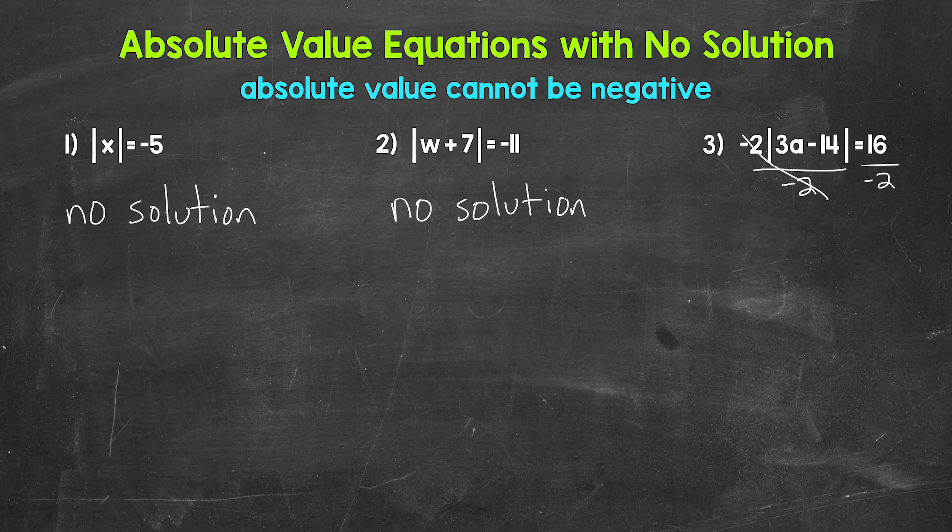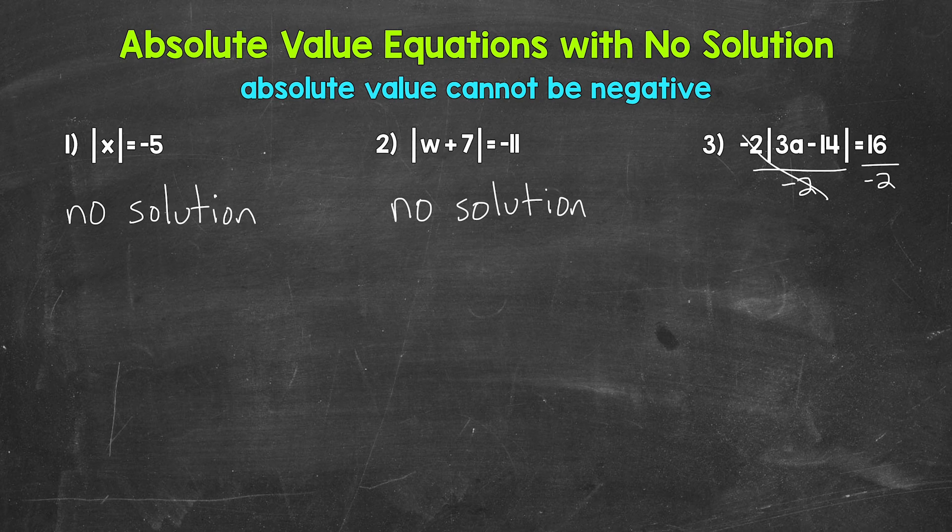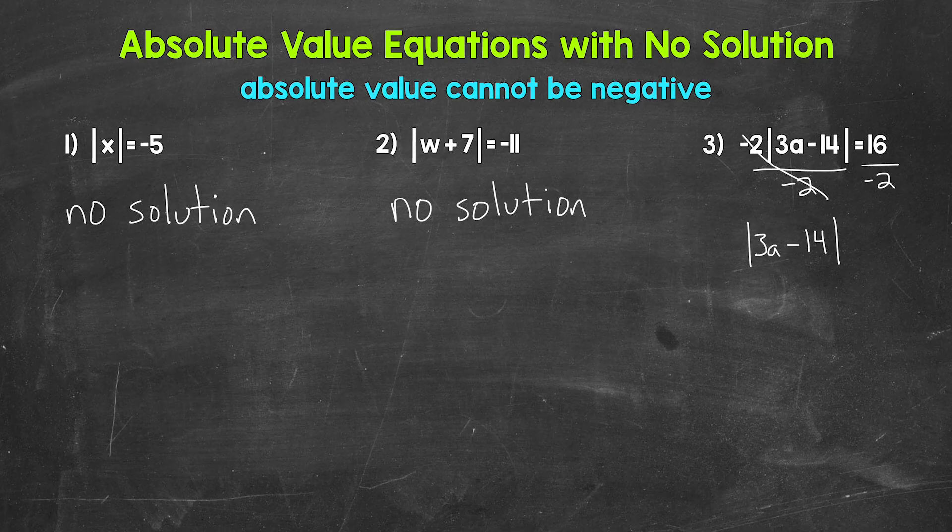These negative twos cancel each other out, and the absolute value of 3a minus 14 is now isolated and that equals. And then on the right side, 16 divided by negative two gives us negative eight. So now we have the absolute value of 3a minus 14 equals negative eight.